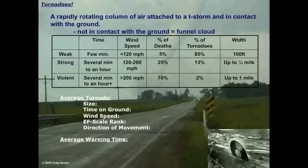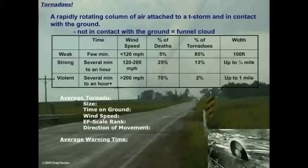Stepping up to the strong category — your EF2 and EF3 tornadoes — these can last several minutes; some have been recorded up to an hour. Wind speeds can get above 120 miles an hour but are generally less than 200. The percentage of deaths jumps way up to about 25% of all fatalities coming from EF2 and EF3 tornadoes, yet only about 13% of all tornadoes are of this category. The width can get up to a quarter mile wide, which is quite a sizable tornado.